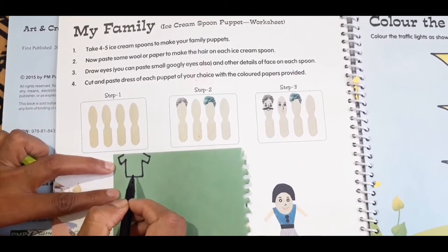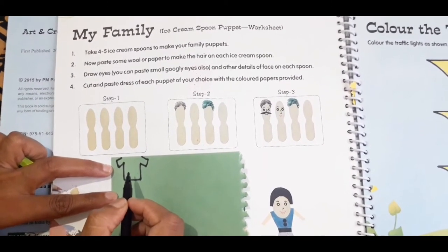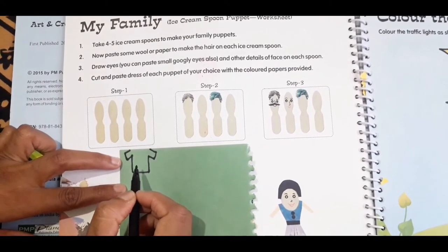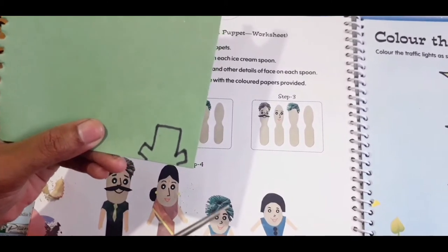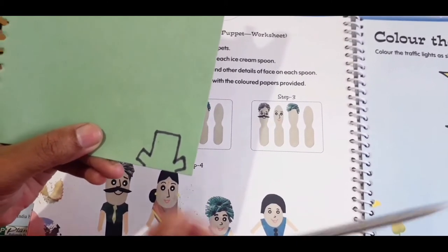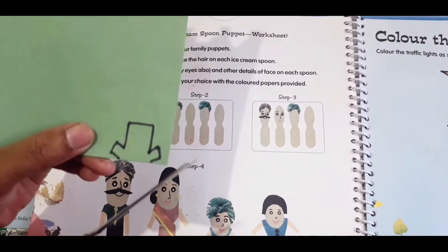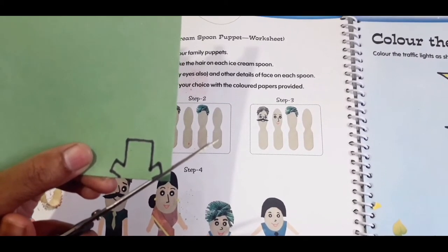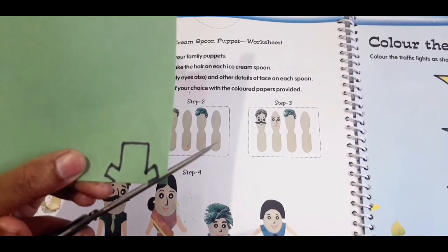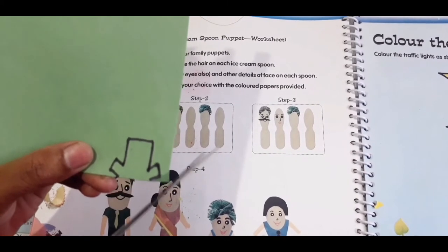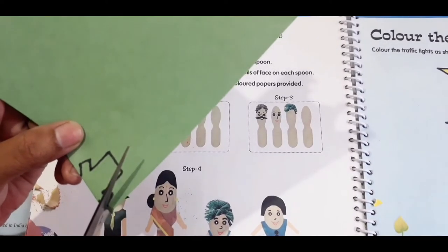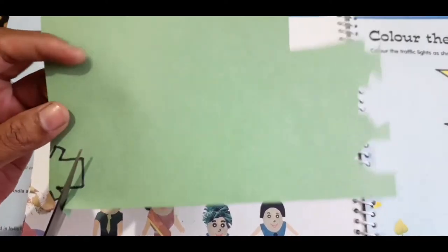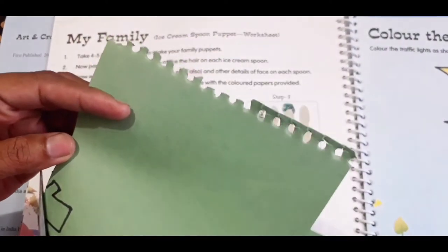Now we'll do the cutting. Take your child-friendly scissors. Your mama, your papa should be there or either your elder brother sister should be there. So cut it very carefully, okay children. This is the sleeve from where I had started. You can make any puppet, it's of your choice children.